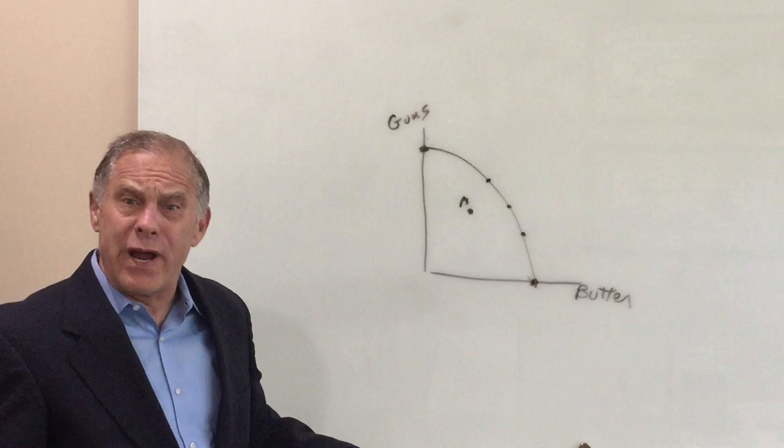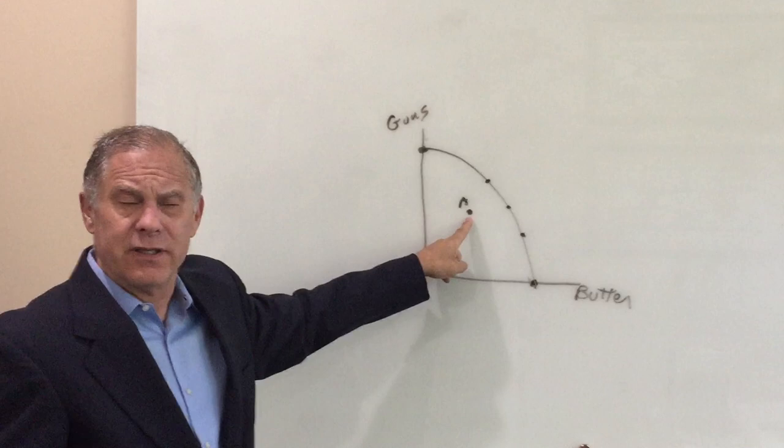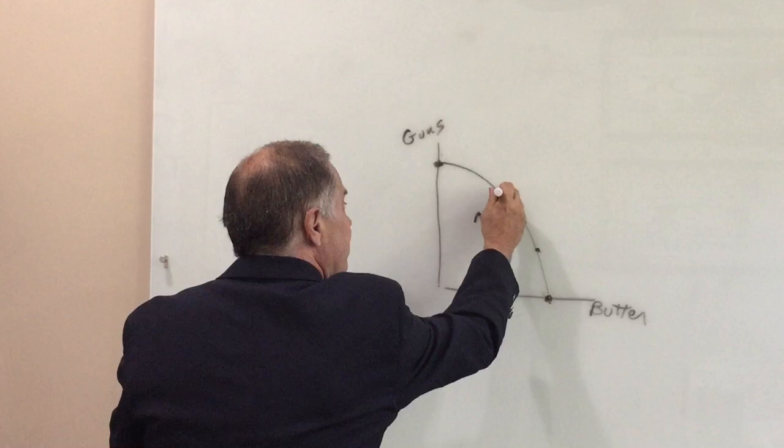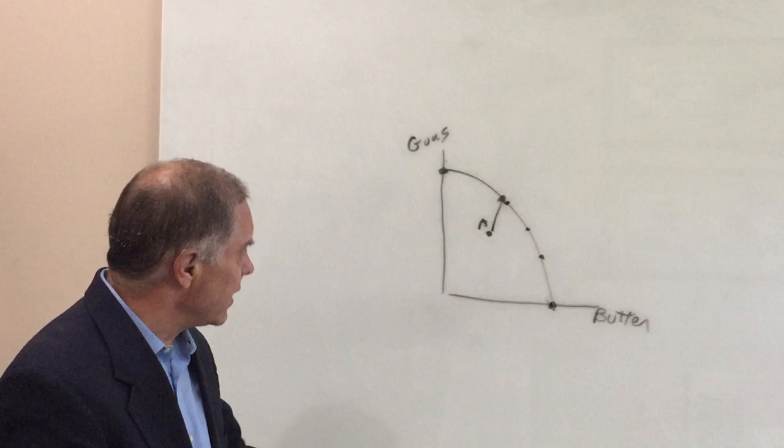And let me give you an example here. During the Great Depression in the 1930s, we were here. We had unemployment. When World War II started, we fully utilized all our resources. We went more to guns, so we went up there, until everyone was employed and we used all of our resources.